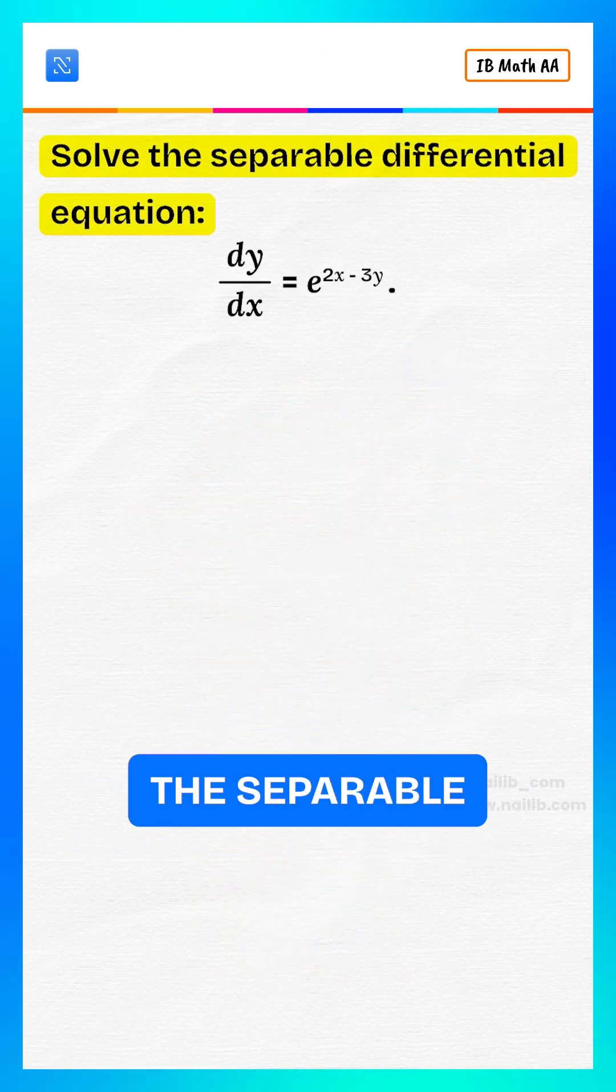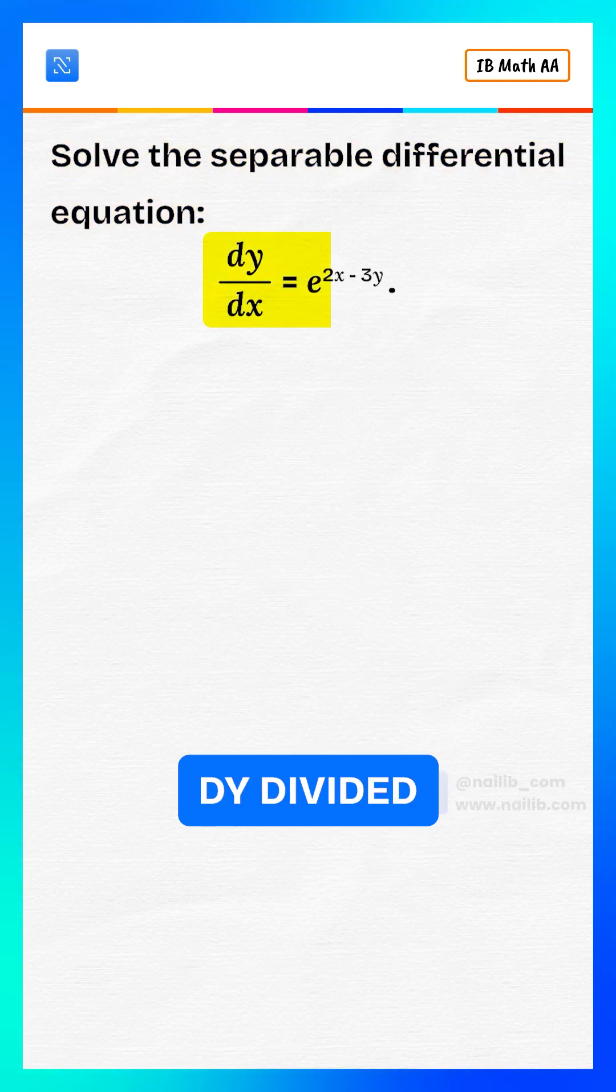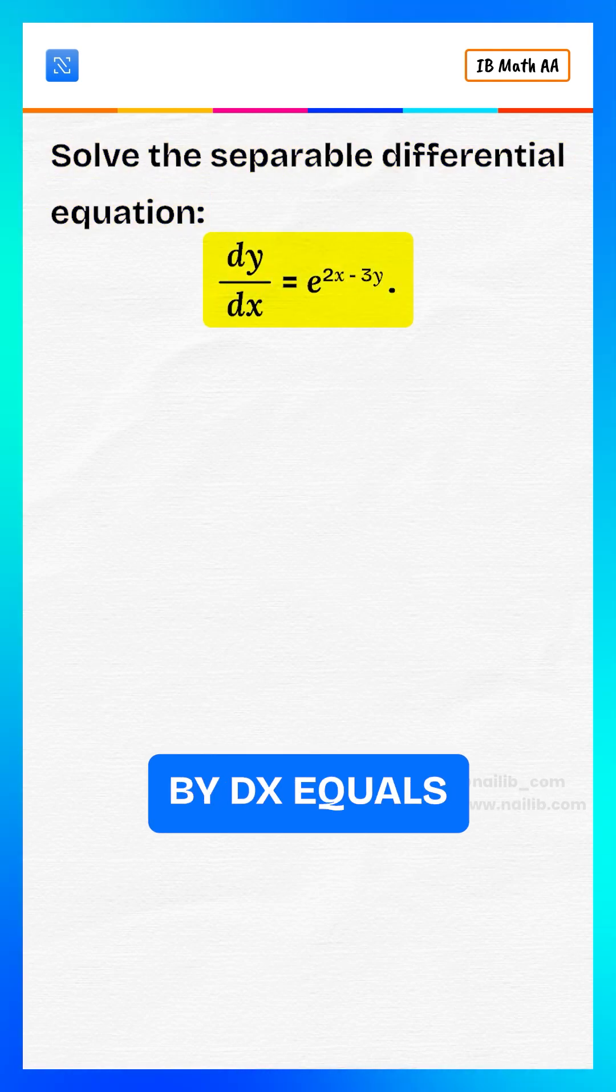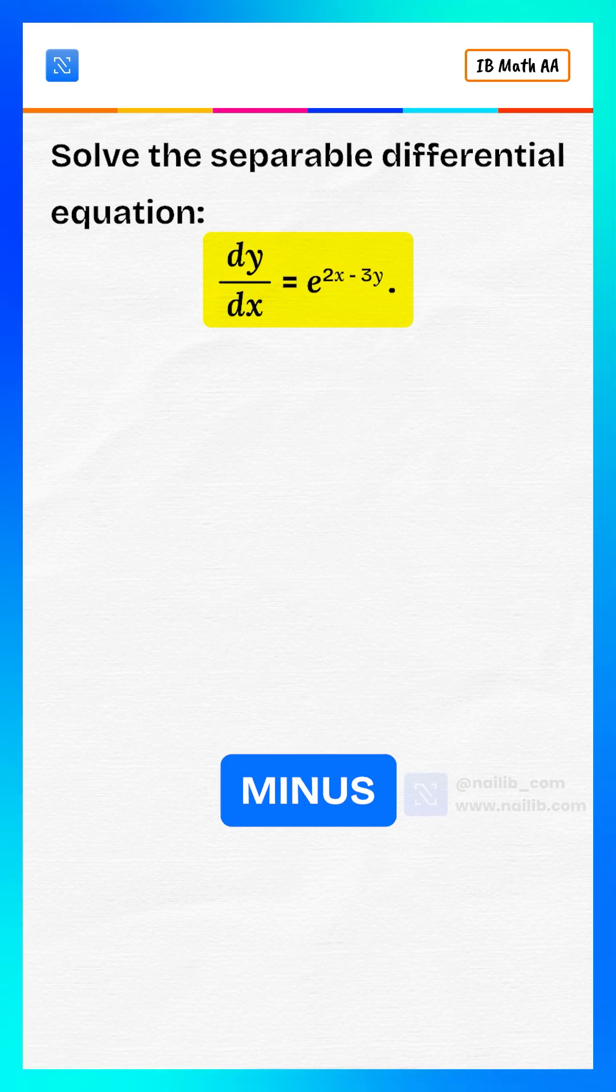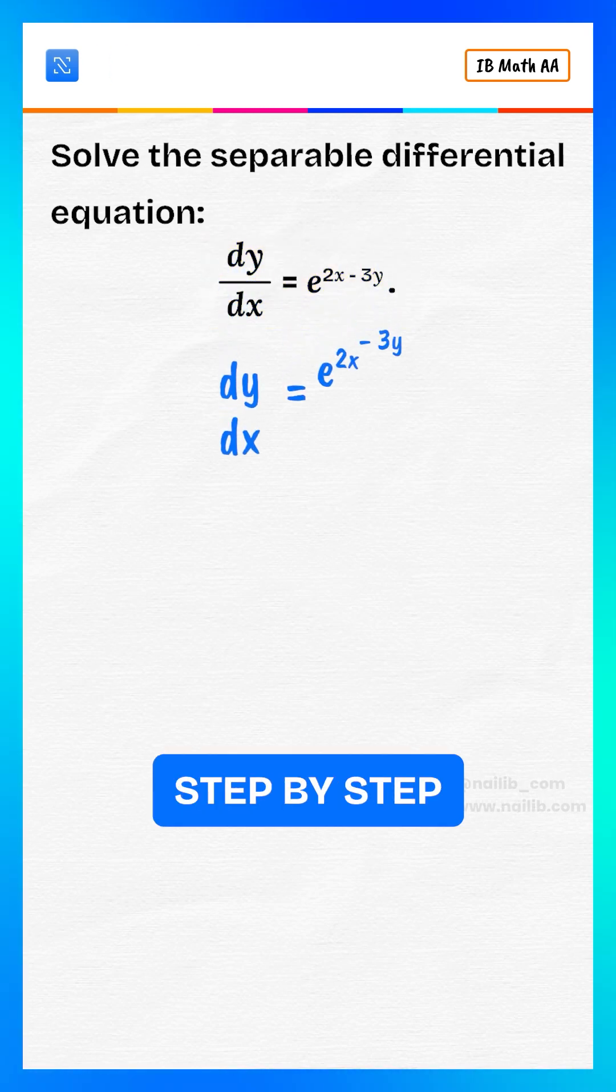Today we are solving the separable differential equation. dy divided by dx equals e to the power of 2x minus 3y. Let's solve step by step.